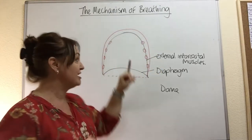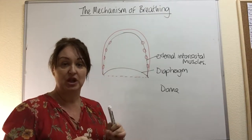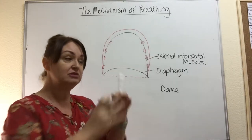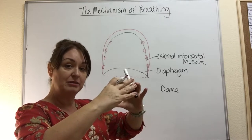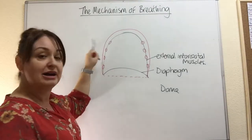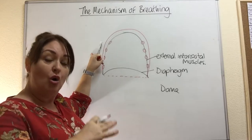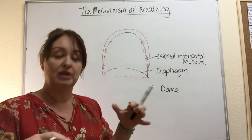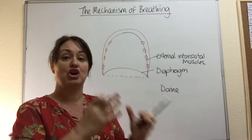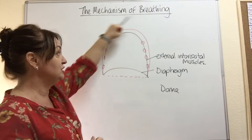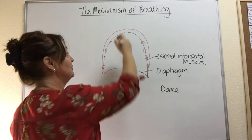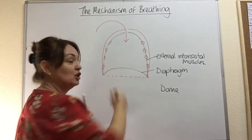So now your thoracic region occupies more space, but it's got the same amount of particles in there as a second ago. If you increase the volume but the number of particles stays the same, then the pressure drops — compared to the atmospheric pressure on the outside. Air always wants to equalise; just like vacuum-packed Pringles when you open them, you hear that rush of air. So air rushes in through the trachea to equalise that pressure.